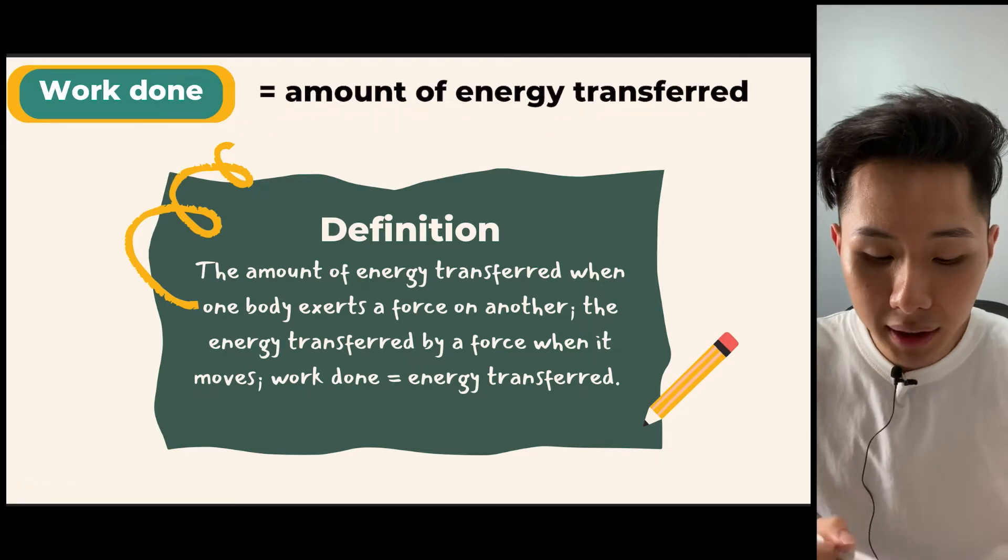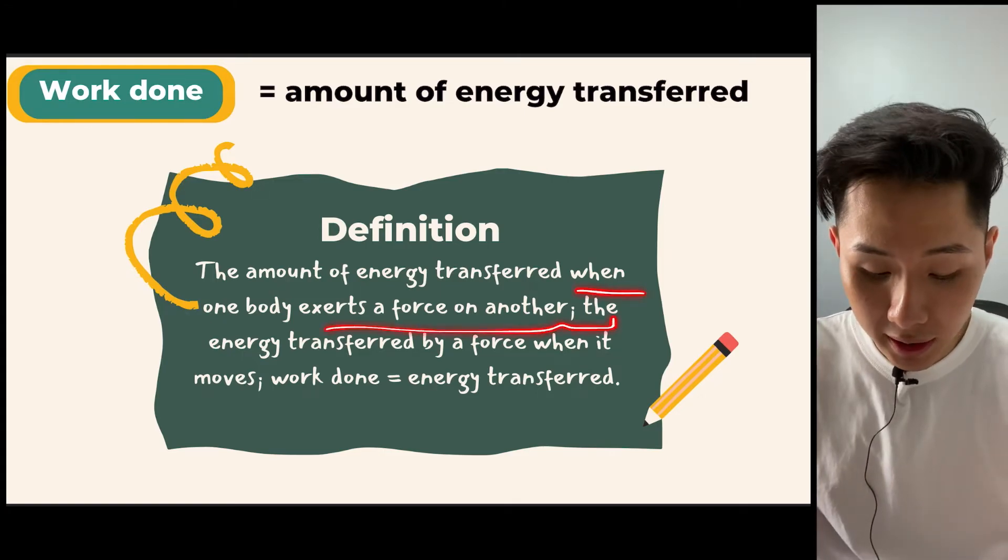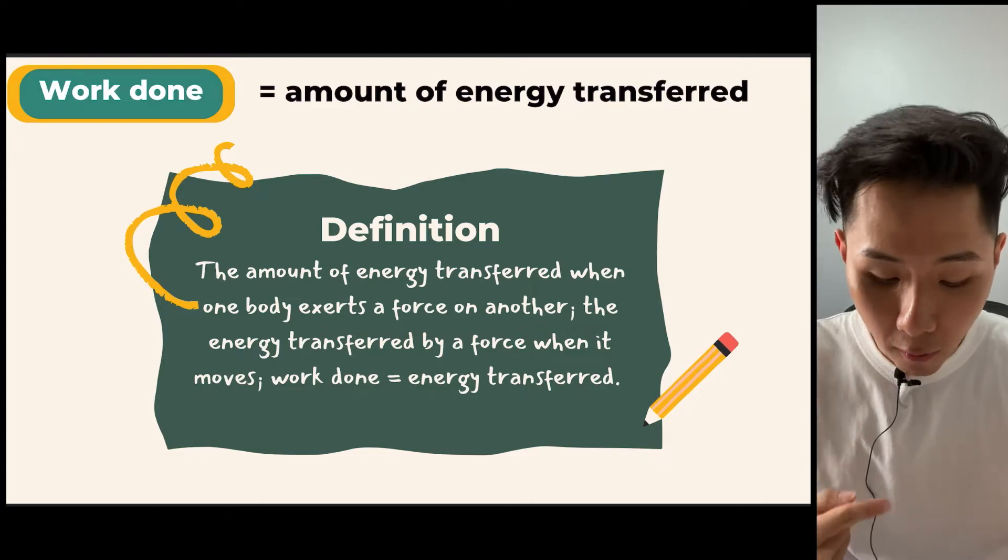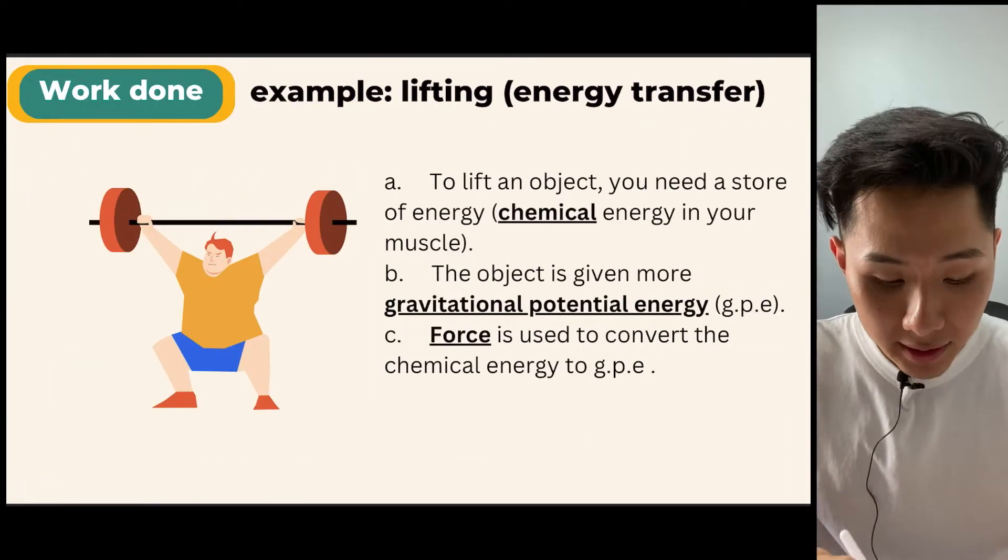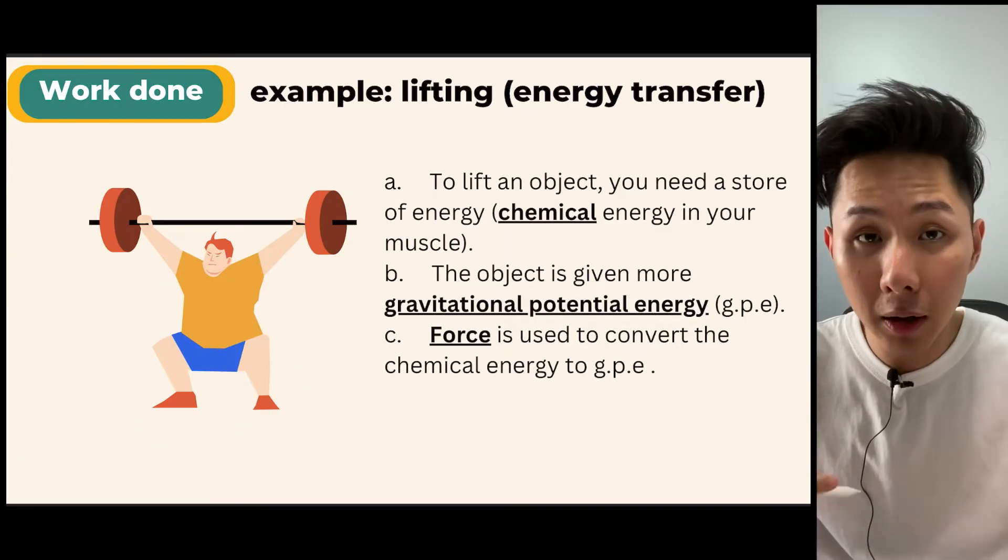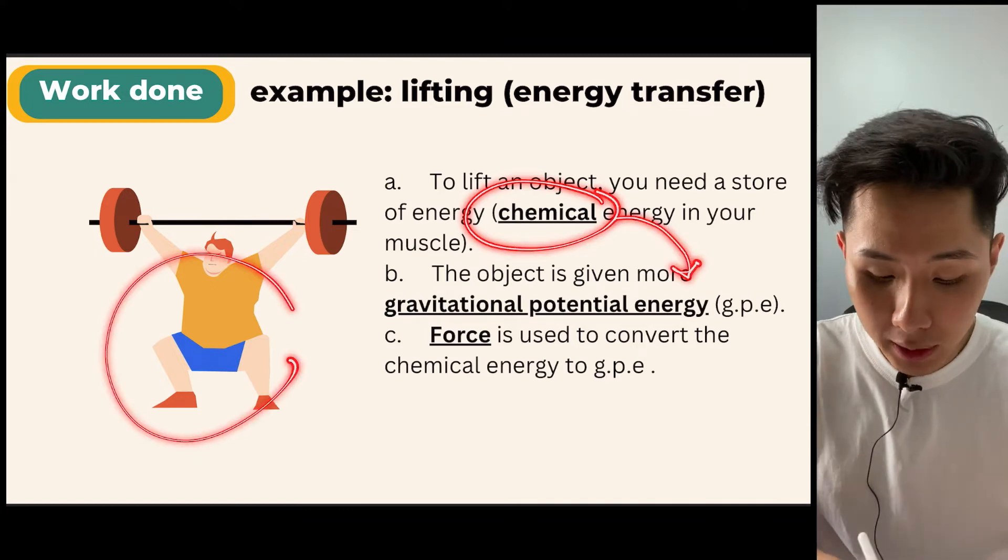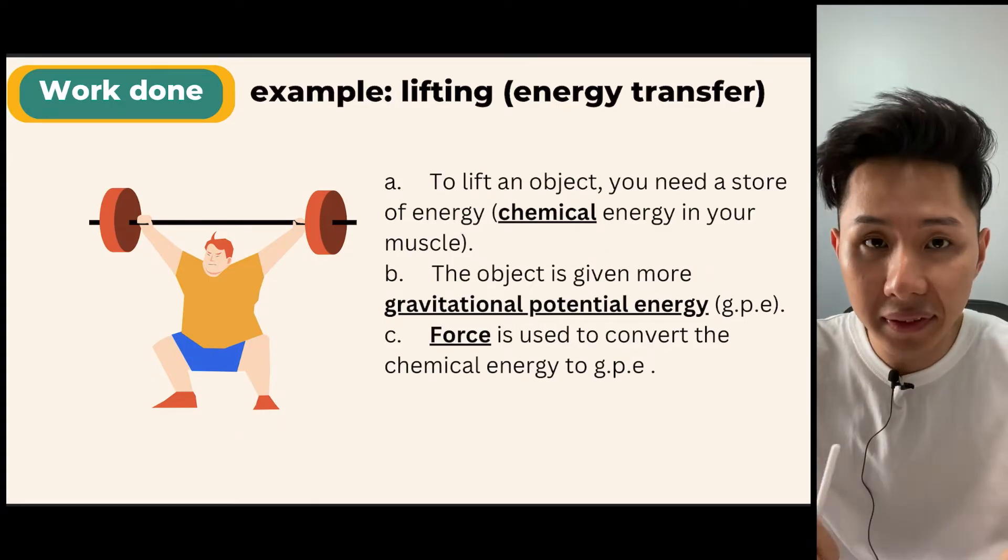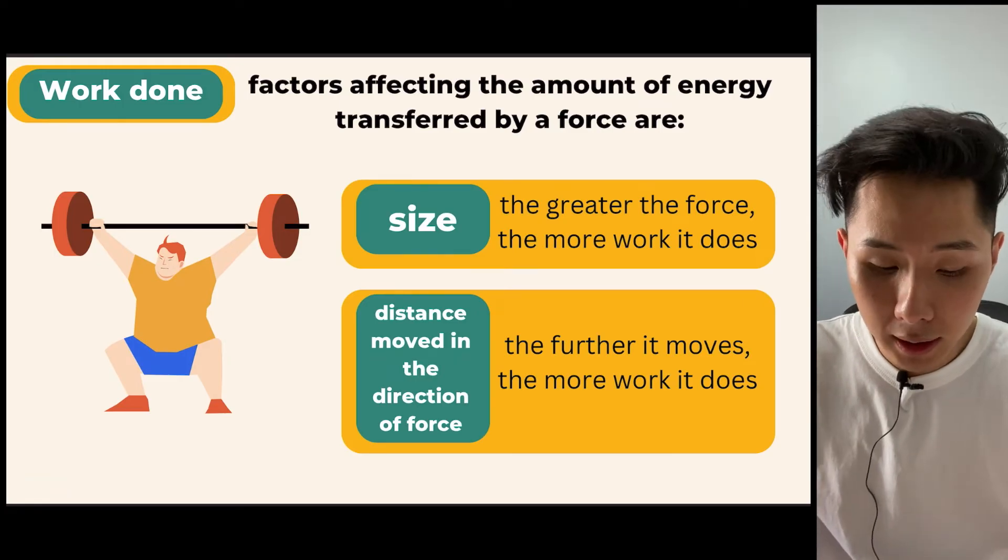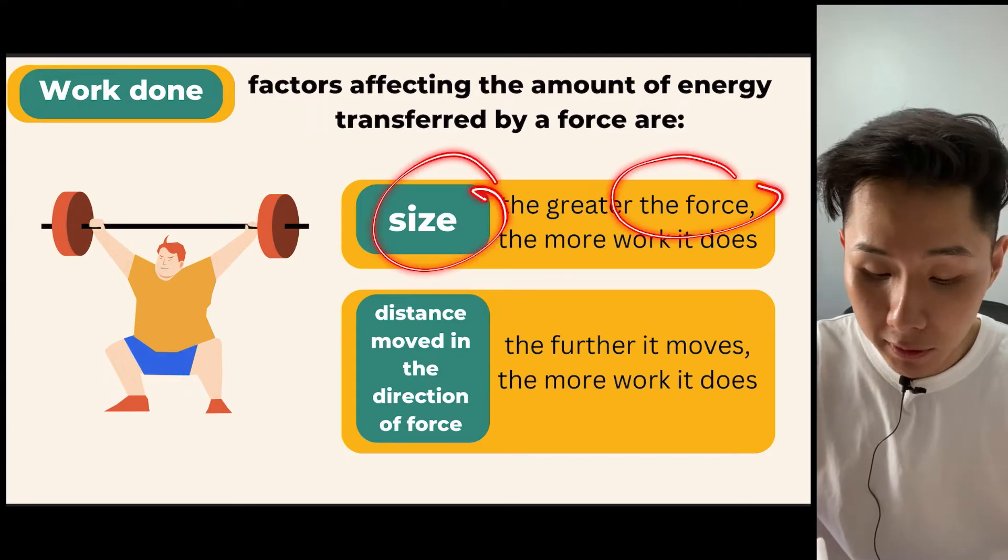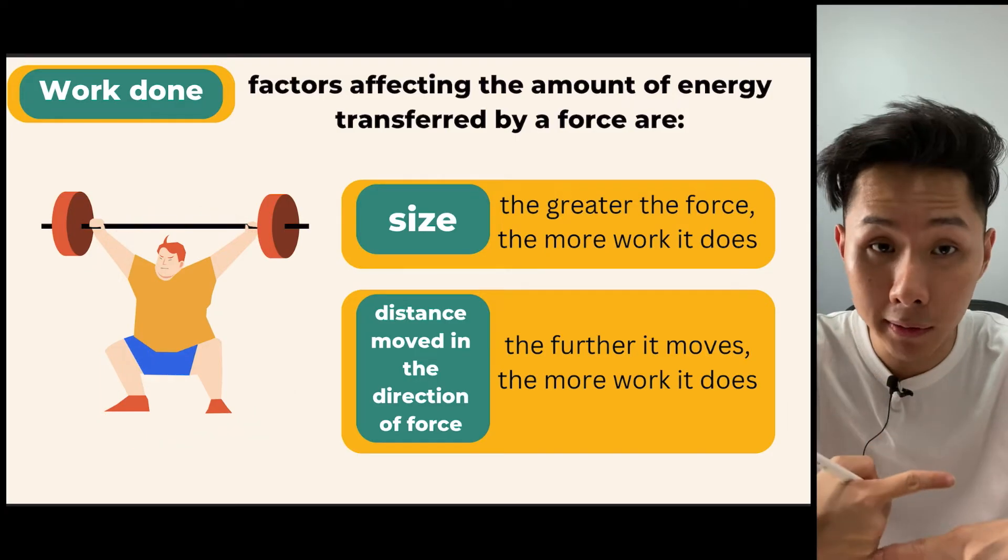Work done is a quantity that represents the amount of energy transfer. So when one body exerts a force on another, so that's when a force causes energy transfer, and the amount of energy transfer, we call it work done. Let me give you an example here. So this person here is lifting up a dumbbell. So we know that the energy transfer here that happens is from chemical to gravitational potential energy. And how this person does it is that he uses force to give the weight a little bit of GPE. And some of the factors that affect how much energy is transferred is the force, like the size of the force. So if this person exerts more force, he's going to lift it higher, which results in more energy being transferred, more work done.